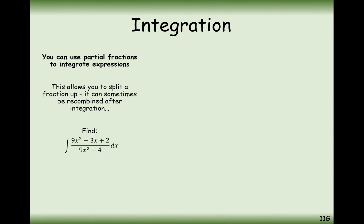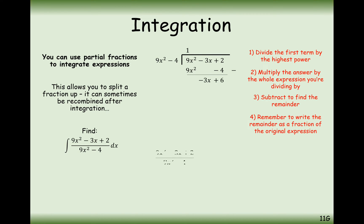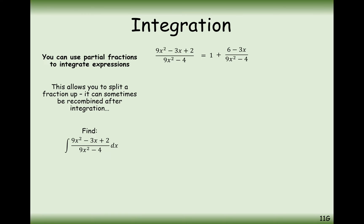Now we're going to get started on a slightly more difficult integration by partial fractions question — one where the highest power on the numerator is equal to the highest power on the denominator. The way we deal with this is to compute the algebraic division of the numerator divided by the denominator. You can do this by long division or by the box method, however you prefer.